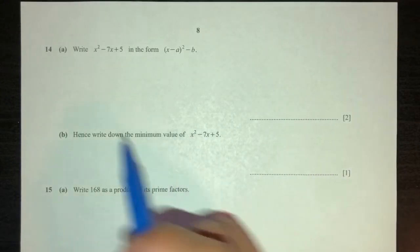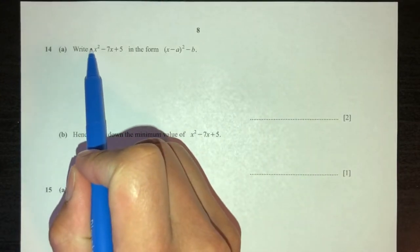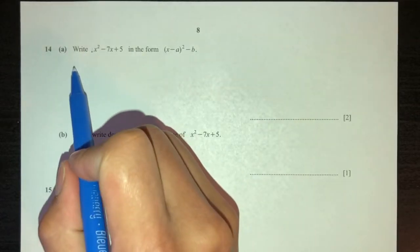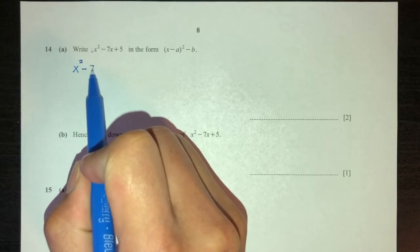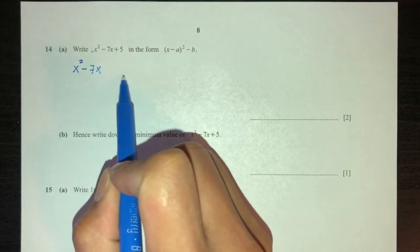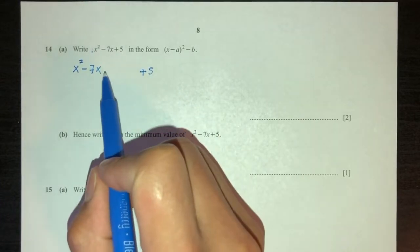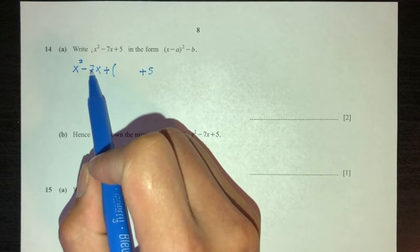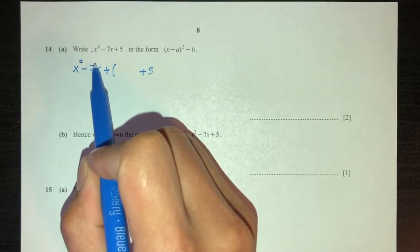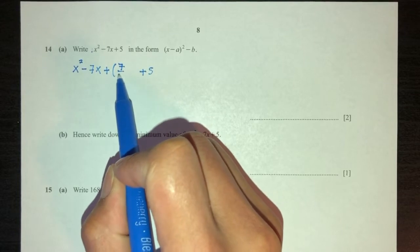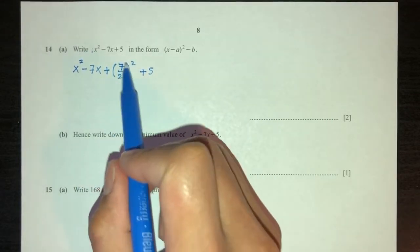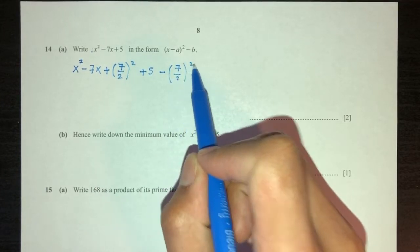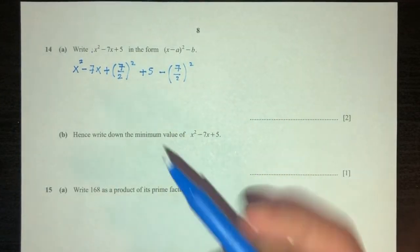Step by step, the first thing we check is, is the coefficient of x squared 1. If it is 1, then we can proceed to the next step. You will write x squared minus 7x and leave some space, write plus 5. Now here I need to add a number. I need to add this number here, which is 7. We don't look at the minus, we'll just look at the number. It's 7, divide by 2, square. Now when you add something, you also have to minus the same number so that the equation does not change.